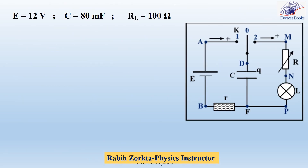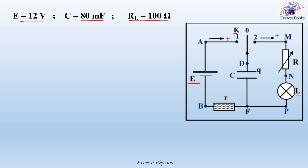The circuit includes an ideal battery of electromotive force E equal to 12 volts, a capacitor of capacitance C equal to 80 millifarads, a lamp L considered as a resistor of resistance RL equal to 100 ohms, a switch K having one input terminal and three output terminals, a rheostat of variable resistance R, and a resistor of resistance r.